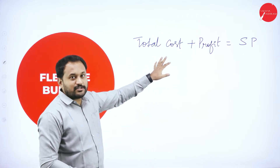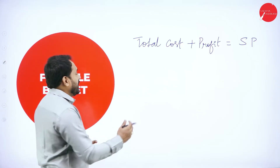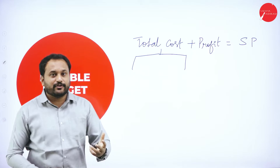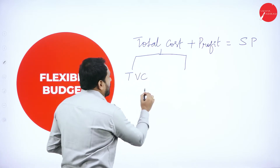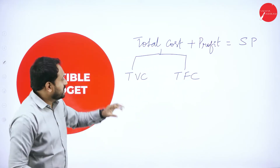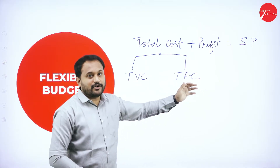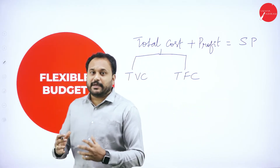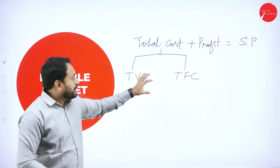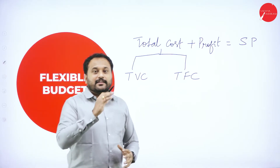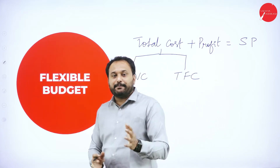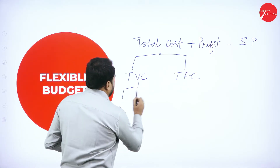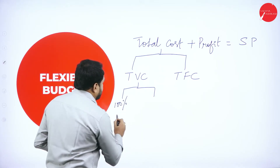Total cost is the cost incurred to manufacture something. This total cost is divided into two types: total variable cost and total fixed cost. Variable cost is the cost which always varies — there is always fluctuation, volatility will always be there — this cost will always change. Fixed cost is the cost that will never change; it is always fixed whatever happens.